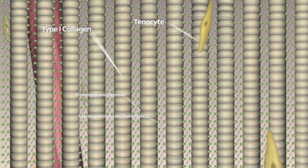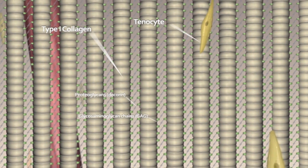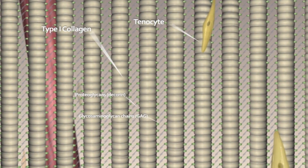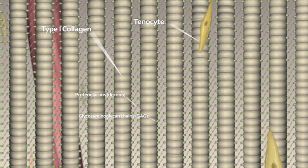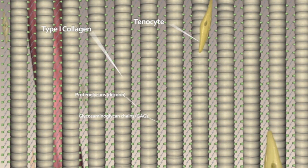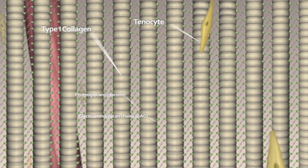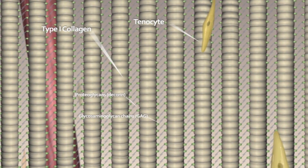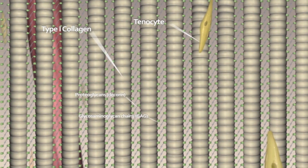When the tendon is subjected to load, the space between the collagen fibrils is said to reduce. This increase in internal pressure, coupled with repetition, may be a factor for the onset of tendinopathy.